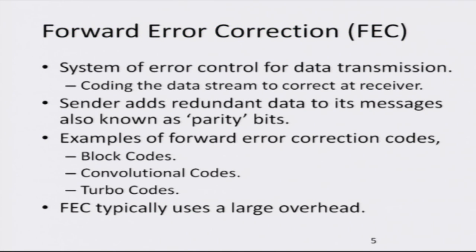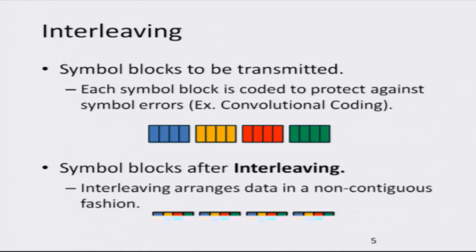Forward error correction is basically enhancing the reliability and accuracy of the transmitted data bits by coding them. There are a large number of advanced codes that have been developed in recent years, such as block codes, convolutional codes, and turbo codes. Forward error correction typically introduces a large overhead — it increases the overhead in communication but also ensures reliability and accuracy of transmission of bits.